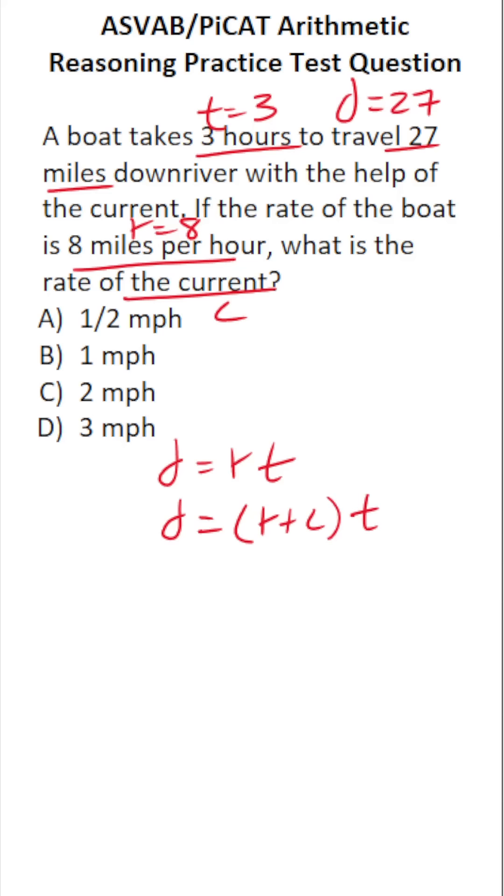Now let's go ahead and fill our values in accordingly. We know the distance was 27 miles. We know the boat traveled at a rate of eight miles per hour. We're going to be solving for C, that is the speed or rate of the current. And we know the T was three.